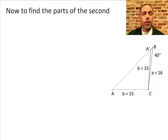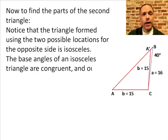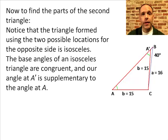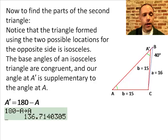Now to find the parts of the second possible triangle. The side that's opposite the given angle is always the side that moves. Looking at its second location, we form an isosceles triangle. Remember from geometry that the base angles of an isosceles triangle are congruent. The angle A prime that we're looking for is supplementary to the angle A that we found in the first triangle. So angle A prime is about 136.7 degrees.